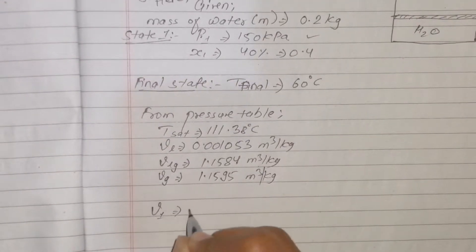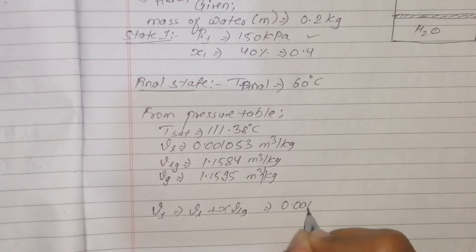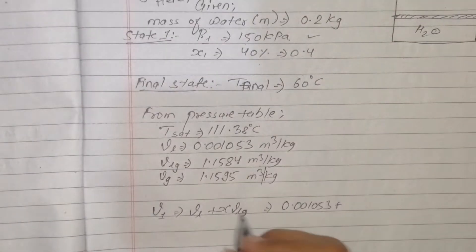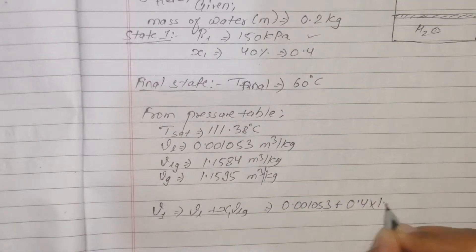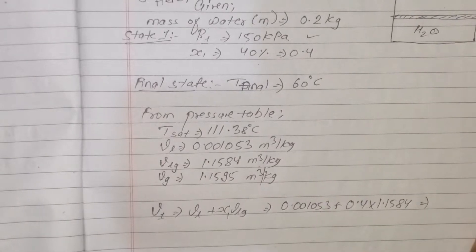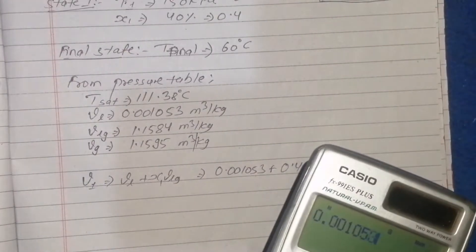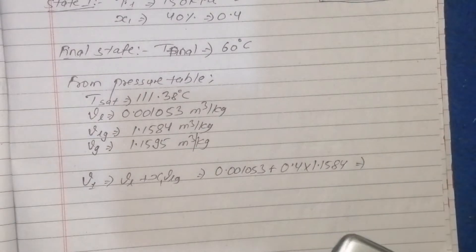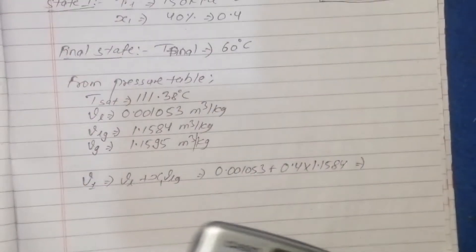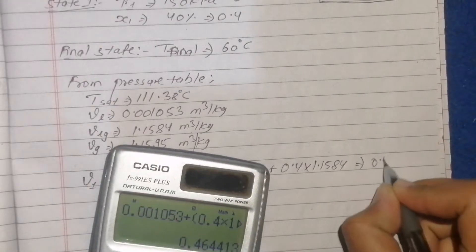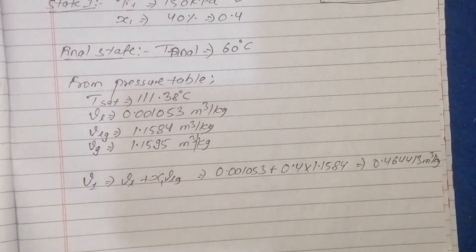Specific volume v1 = vf + x * vfg = 0.001053 + 0.4 * vfg. vfg is 1.15843, so v1 = 0.001053 + 0.4 * 1.15843 = 0.46441 m³/kg.